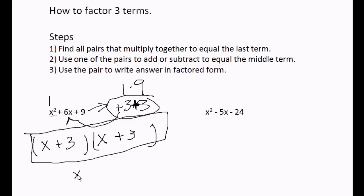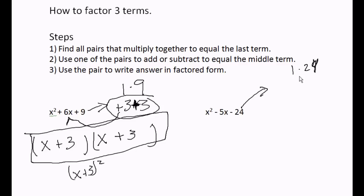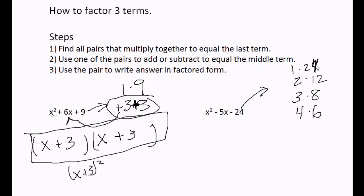The factored form of x² + 6x + 9 is (x + 3)(x + 3), or you could say (x + 3)² since you have two of them. The second problem: step one, find all pairs that multiply together to equal the last term. One times twenty-four, two times twelve, three times eight, four times six — these are all the pairs. Can we find one by putting plus or minuses in front of them to equal the middle term, negative five?